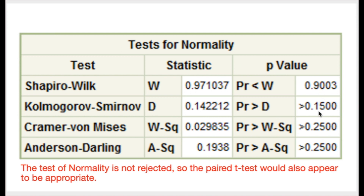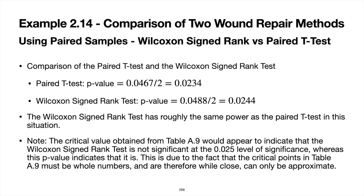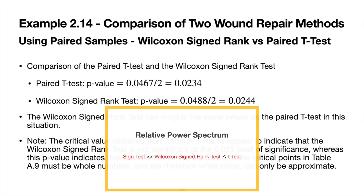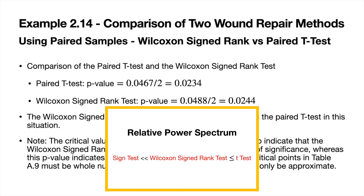Looking at the normality tests, none of the p-values are small. There is no evidence that the distribution of differences is not normally distributed, so the t-test is appropriate here. The p-value for the t-test is 0.0467 — a two-sided p-value — so the one-sided p-value is 0.0234. Comparing to the Wilcoxon signed rank test p-value of 0.0244, they are very similar. While the sign test suffers from lower power than the Wilcoxon, in this situation the Wilcoxon signed rank test rivals the t-test in terms of power.